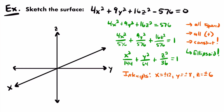The intercepts for these ellipses are x = ±12, y = ±8, and z = ±6. That's because we can rewrite our equation as x²/12² + y²/8² + z²/6² = 1. Those values of 12, 8, and 6 are where we get our intercepts from for x, y, and z.